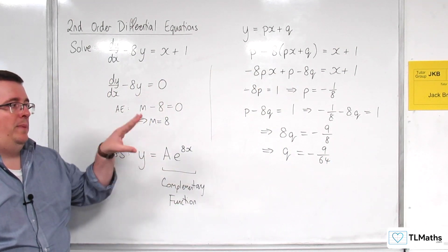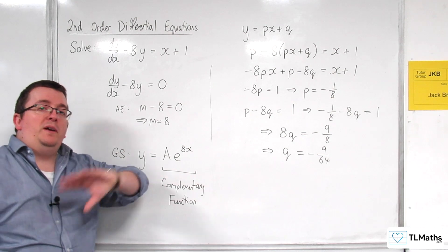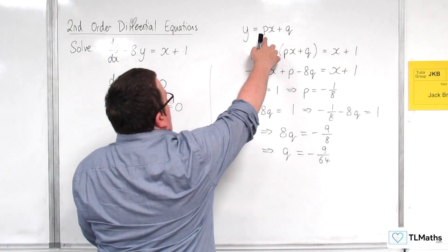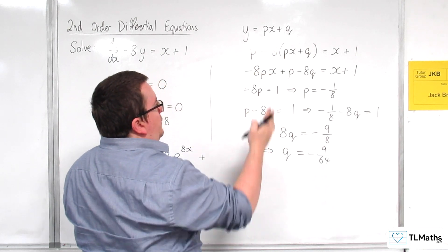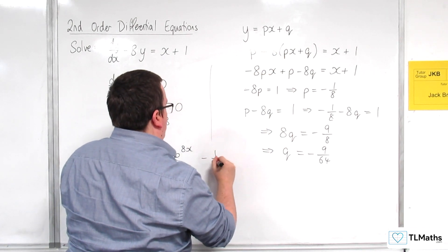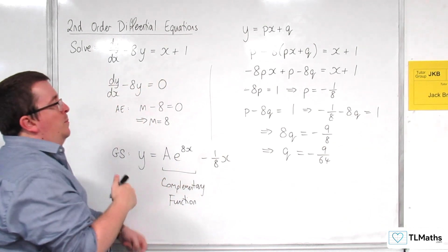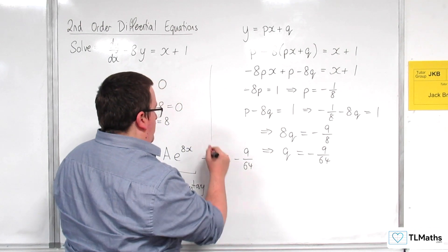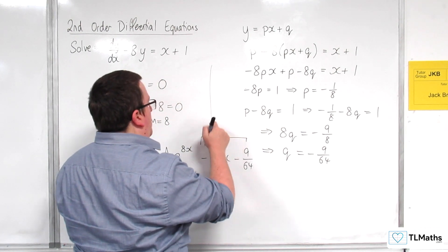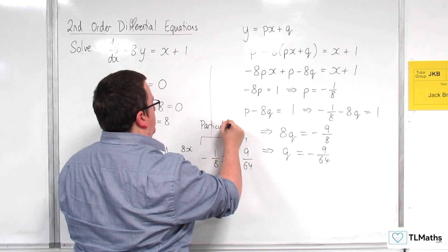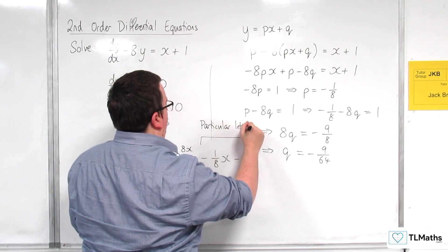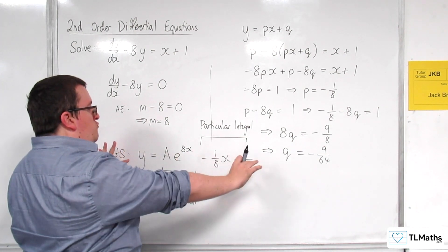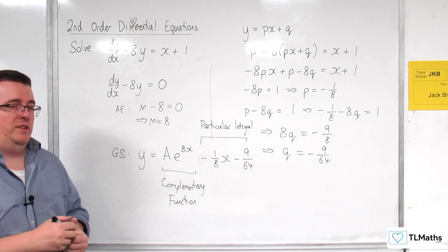So I now have the pieces I need for the particular integral, which would say that I need plus p times x. So actually minus 1 eighth times x plus q, which is take away 9 over 64. And this part is my particular integral. Okay. And so this is the general solution to the differential equation.